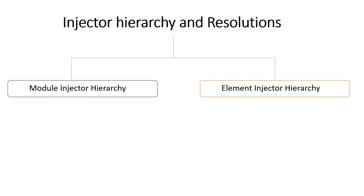In Angular there are two kinds of hierarchy. One is module injector hierarchy and another is element injector hierarchy, and both have some different characteristics, so it should be clear where exactly our services should be provided in order to work perfectly. Let's talk about module injector hierarchy first.